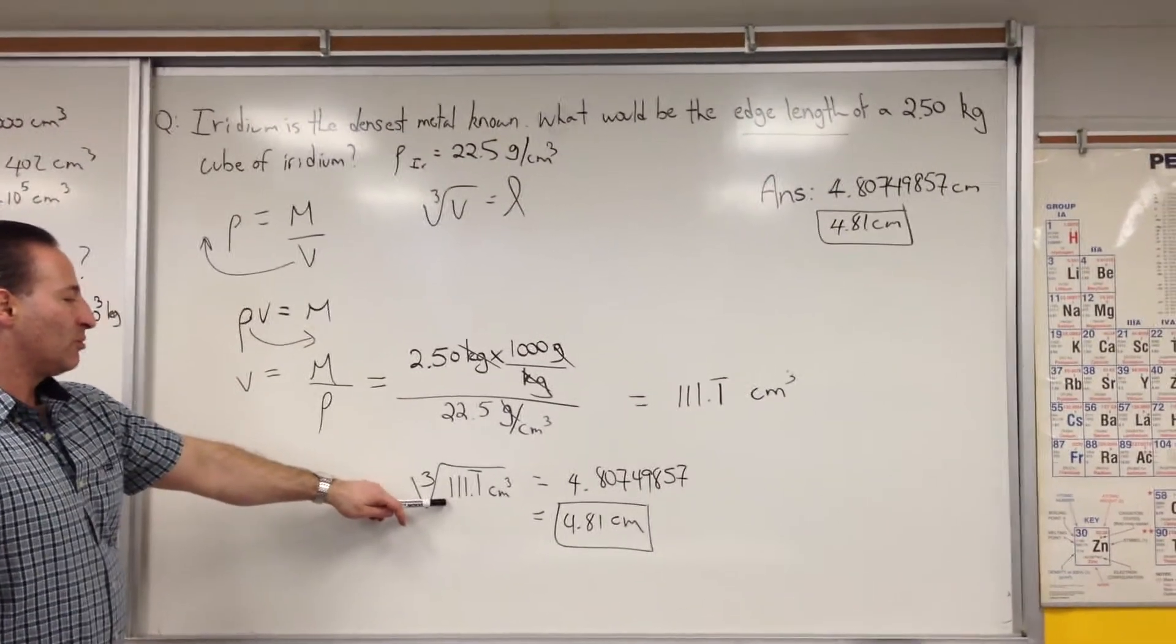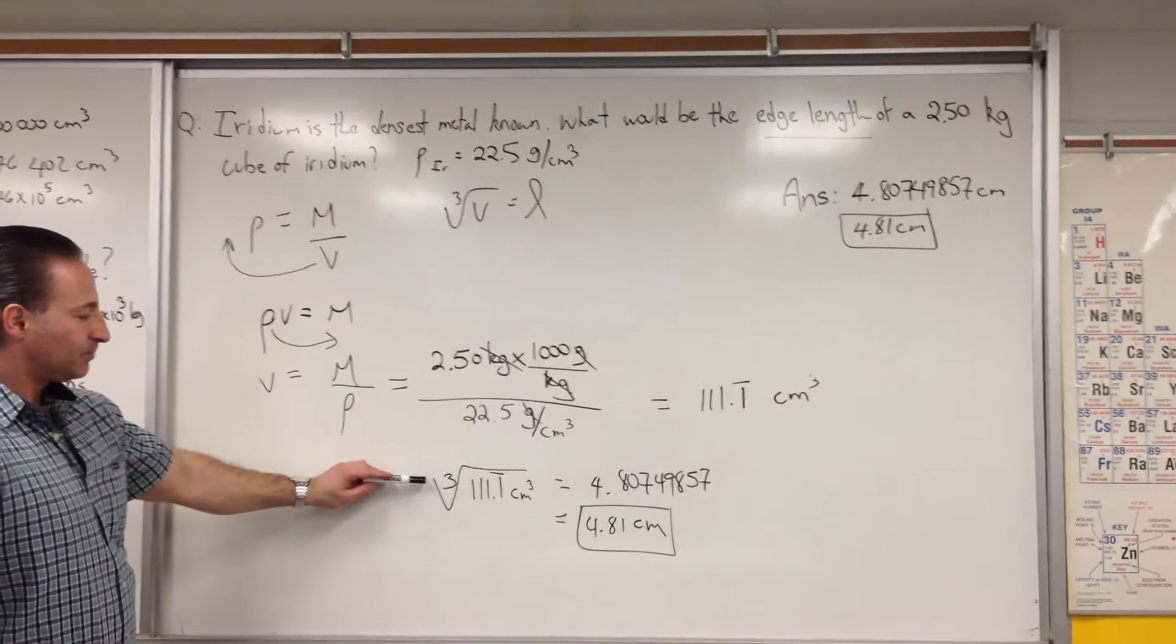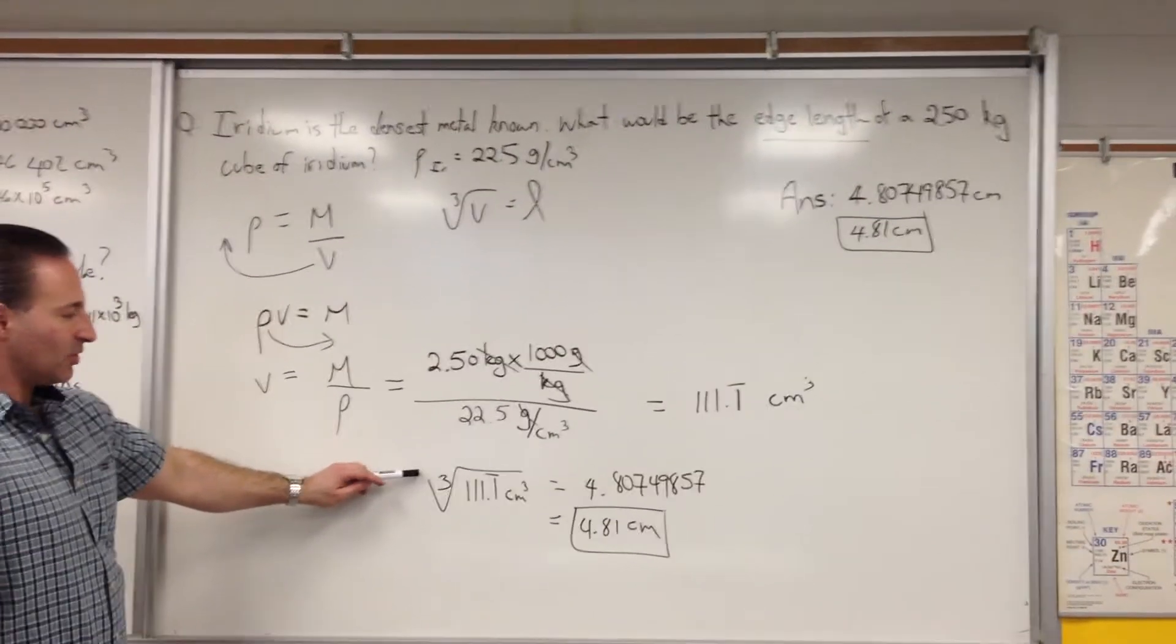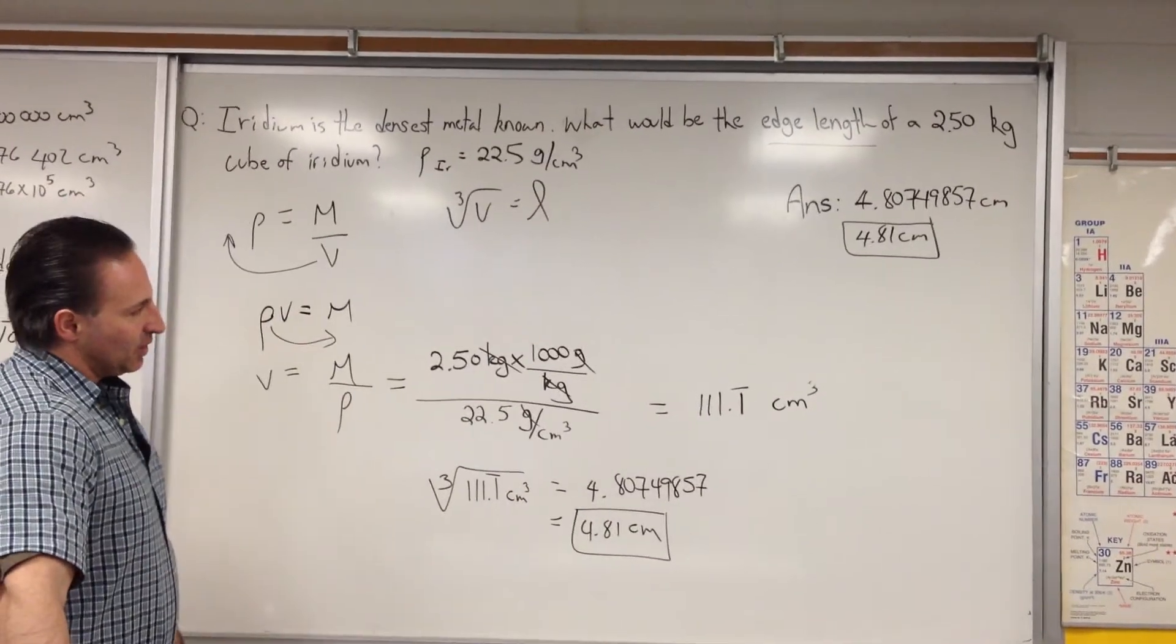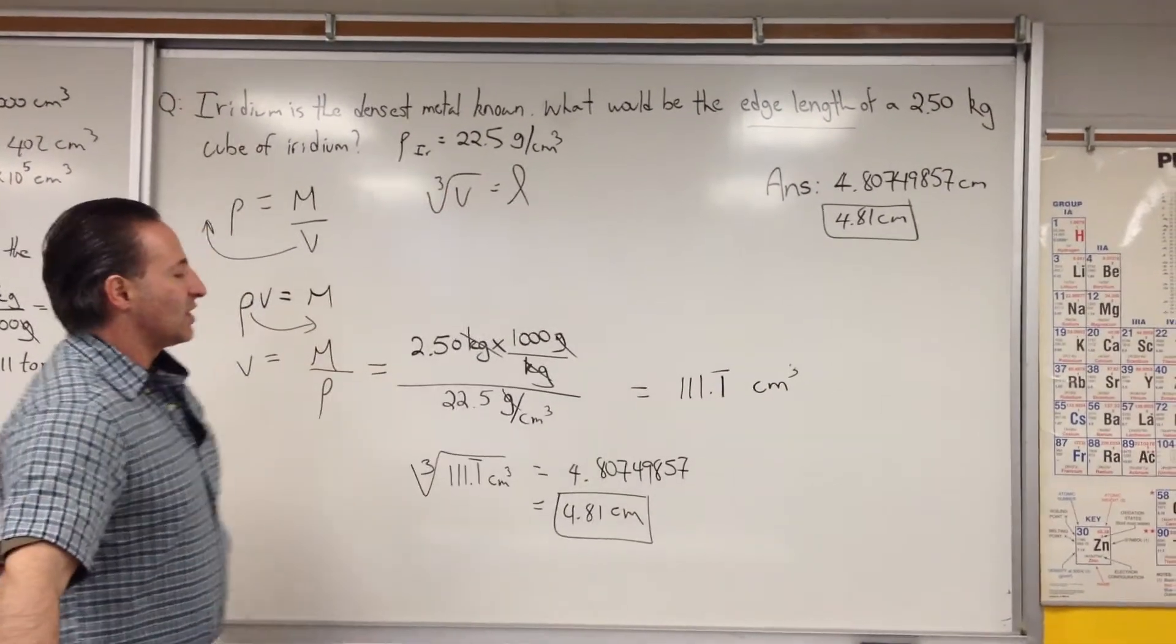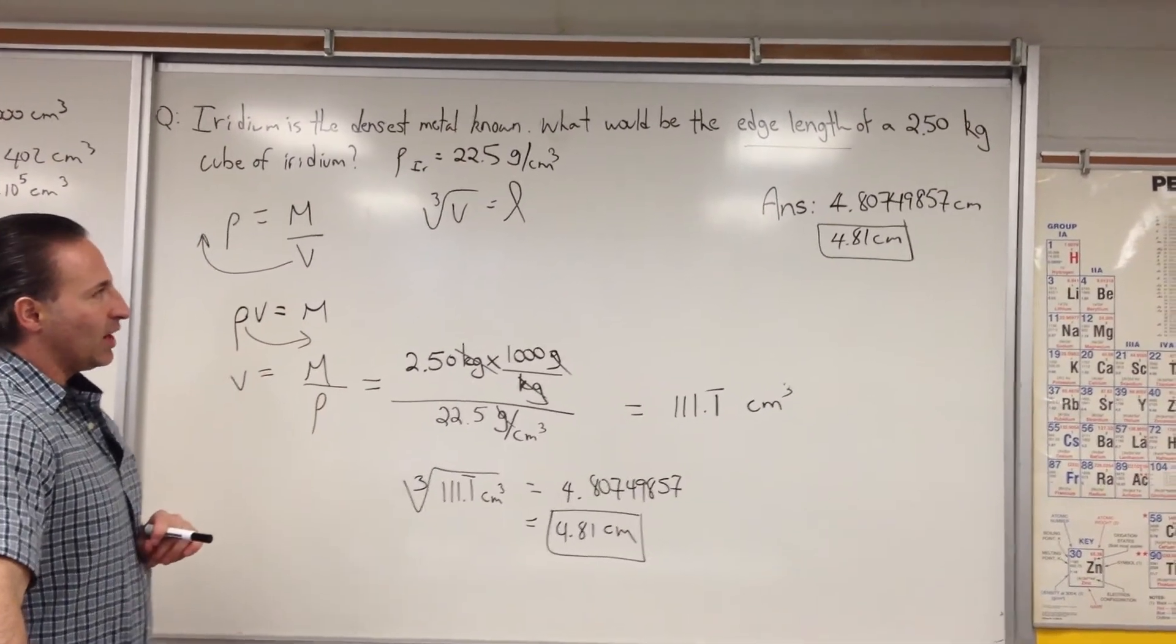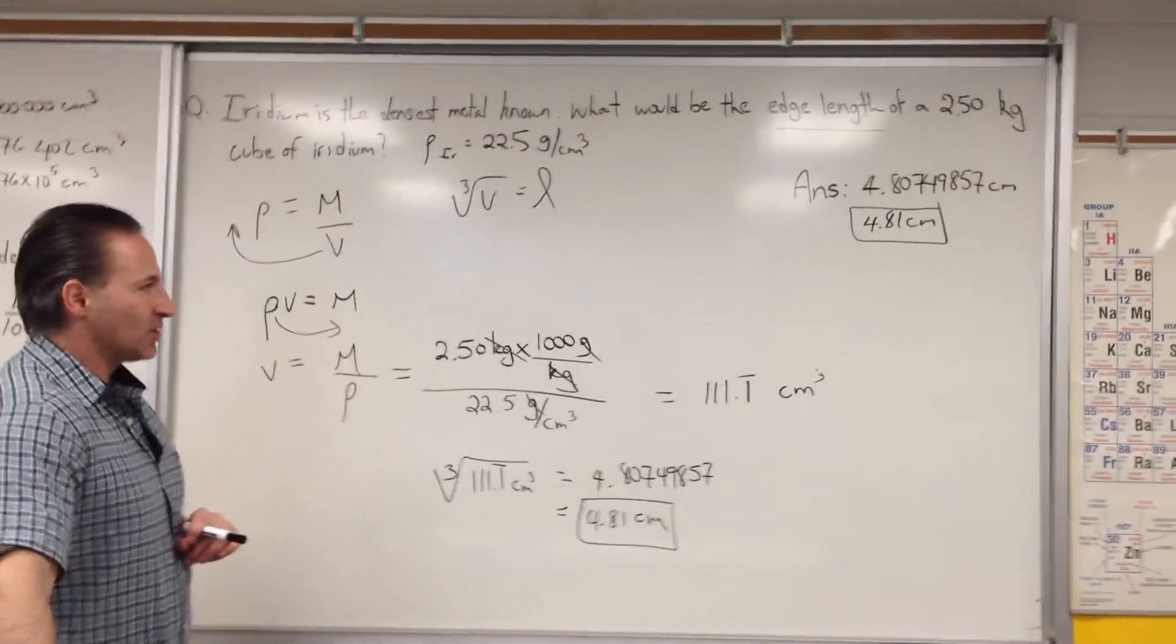And we get 111.1 recurring centimeters cubed. We then take the cube root of this number to obtain this number with many decimals. And we report it as 4.81 because we're only allowed to report it down to three significant figures. So a cube of iridium weighing 2.5 kilograms would be 4.81 centimeters in height.